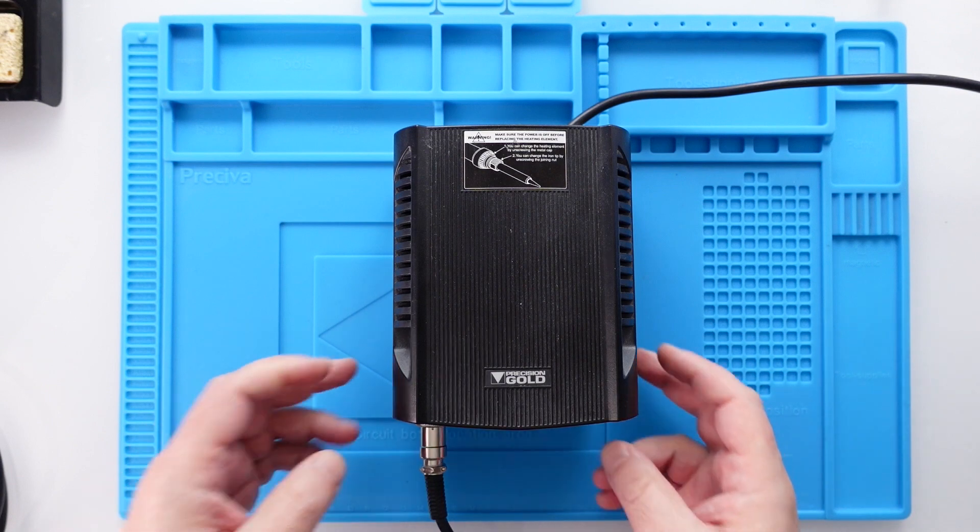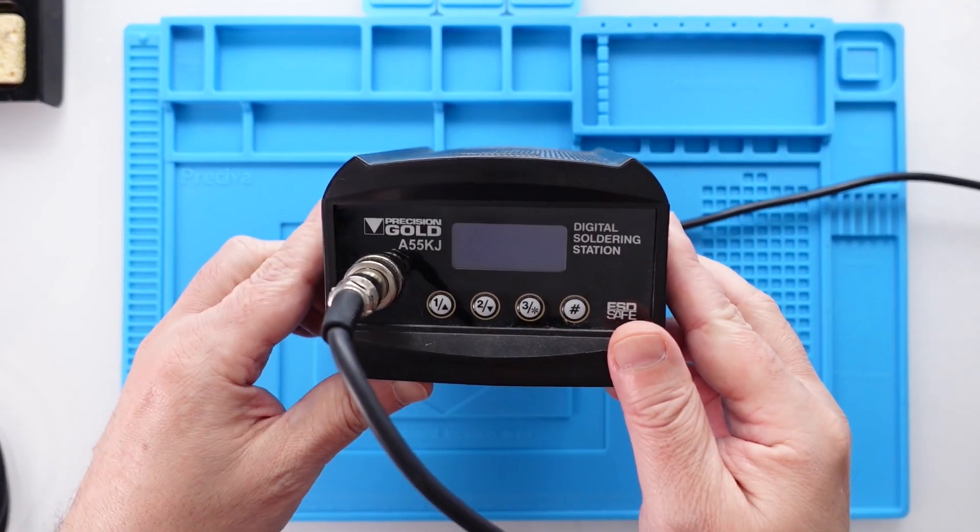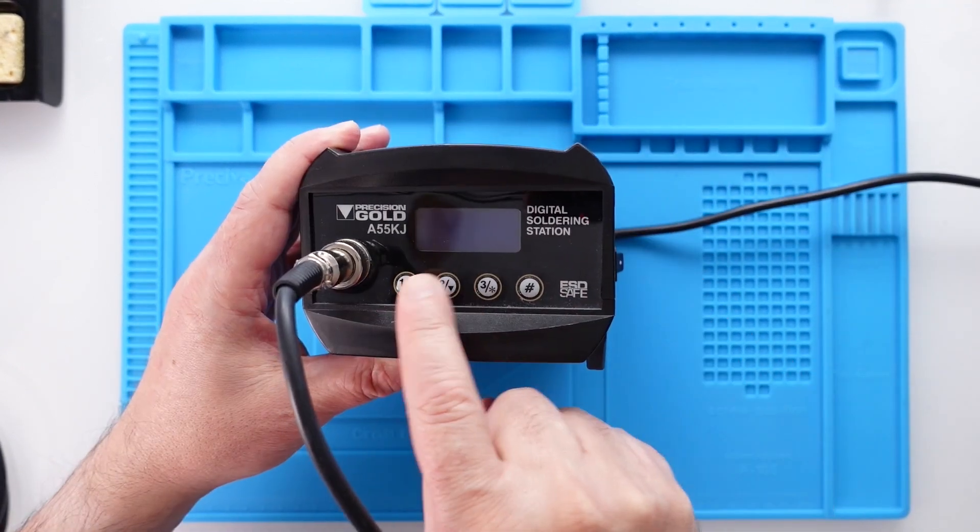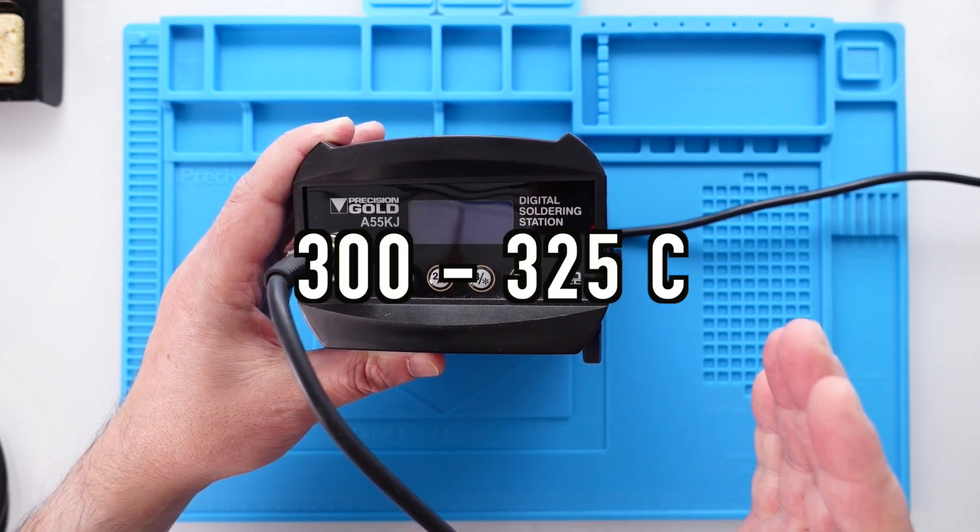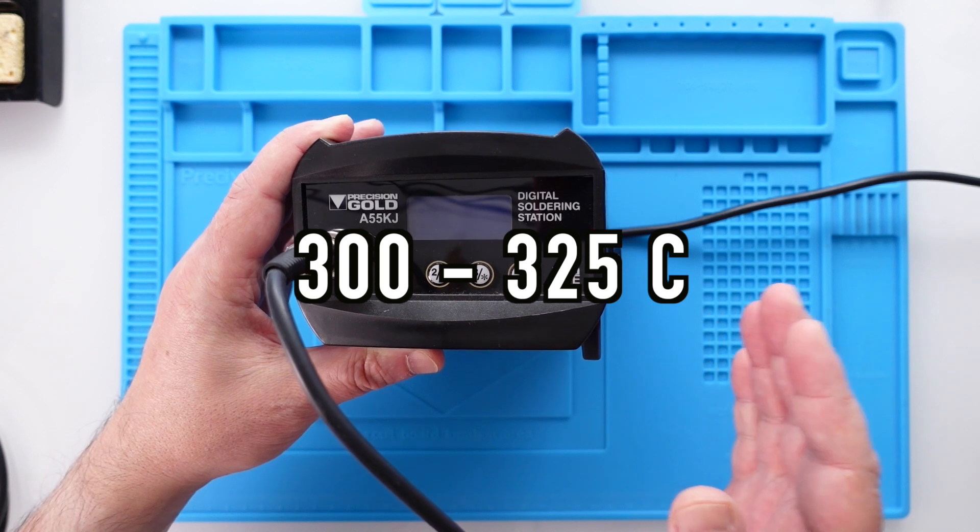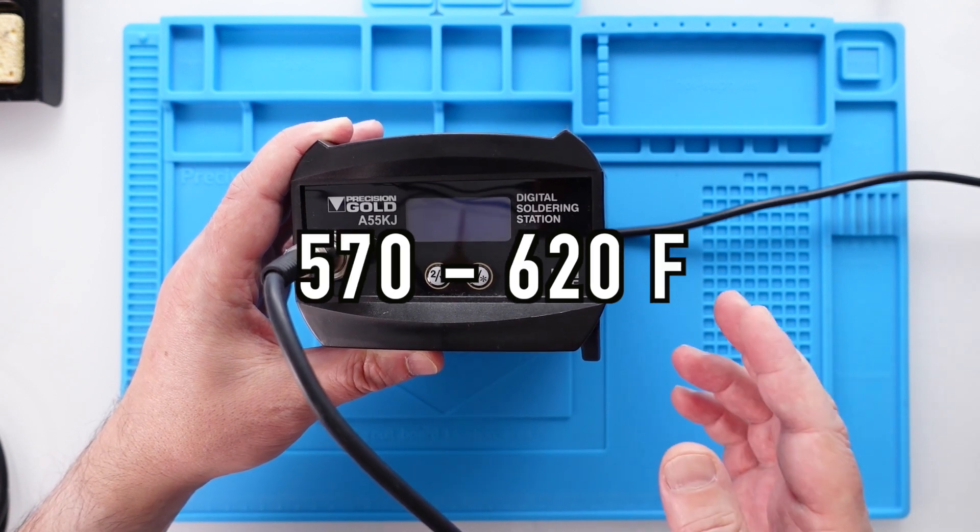If you can spend a little bit more money, I would suggest getting a soldering station like this one or similar. Here you can control the temperature, which should be between 300 and 325 degrees Celsius, or 570 and 620 Fahrenheit.